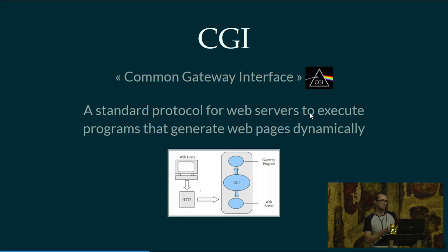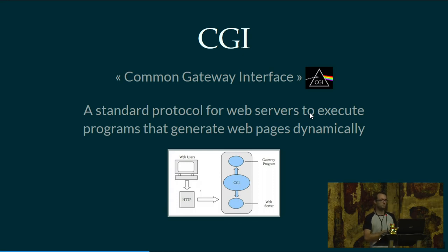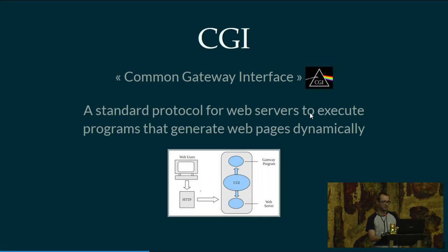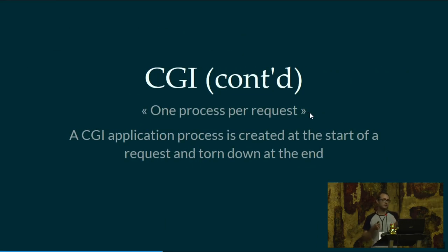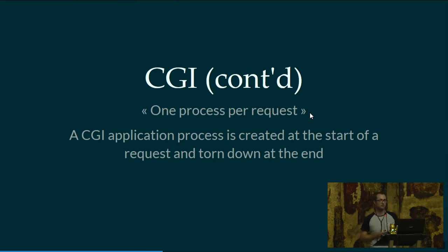Basically, an HTTP request comes in and is handled by the web server. The web server figures that this request needs to be handled by a program, so it will start a process for that program, pass the request to it. The program handles the request, creates a response, and passes it back to the web server. The web server then finishes the process and wraps the response into an HTTP response sent back to the requesting client. The paradigm of this standard is one process per request — the CGI process is created at the start of the request and torn down at the end.